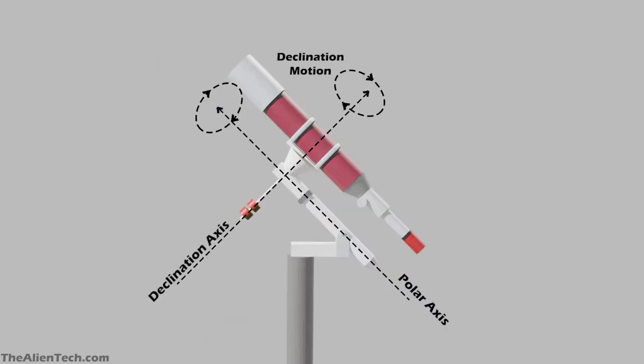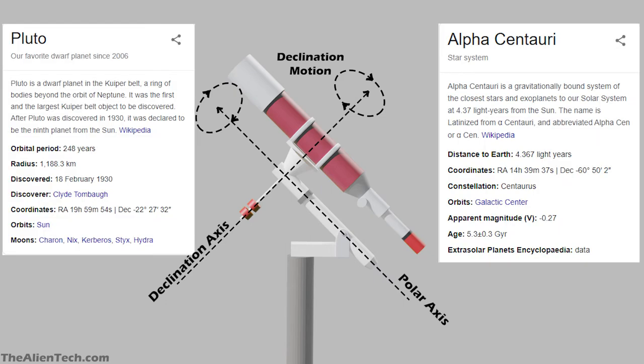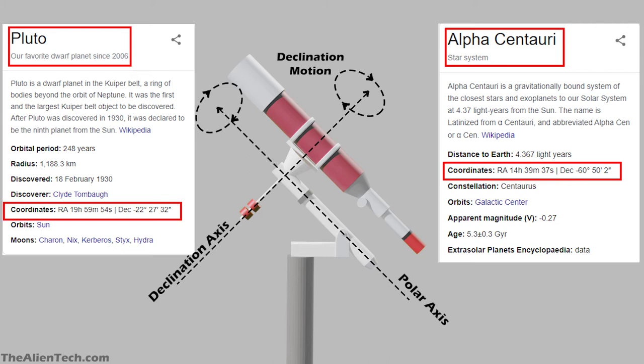The declination axis is the perpendicular axis to the polar axis. You can consider this as equivalent to latitude. The combination of right ascension and declination helps you locate the object in the sky. For example, the right ascension tells you in which direction you should look at, and the declination tells you how far up or down the object is from the equator.